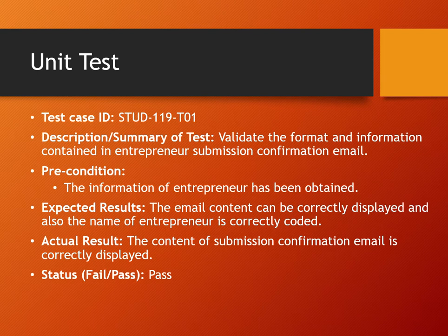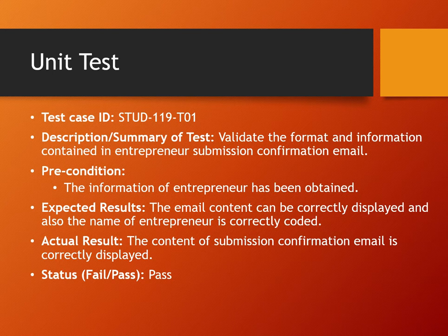We conducted two tests for this use case. The first is a unit test. In this unit test, we validate the format and information contained in the entrepreneur submission confirmation email. The precondition is that the information of the entrepreneur has been obtained. The expected result is that the email content can be correctly displayed and also the name of the entrepreneur is correctly coded. The actual test result is as what we expected.